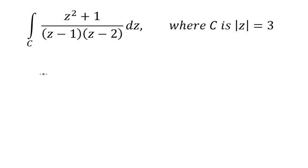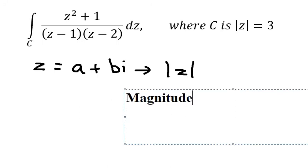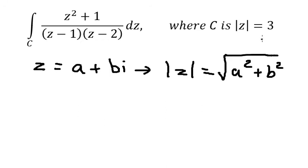We know that z is about the complex function, and that should be about a plus bi, where i is the imaginary unit. So if we put this inside the absolute value, we have the magnitude of z, which is the square root of a squared plus b squared, and this equals 3.